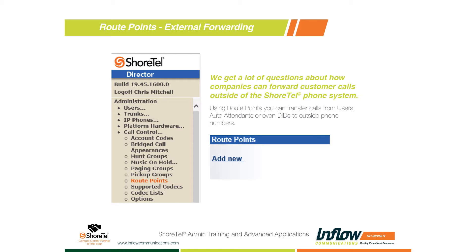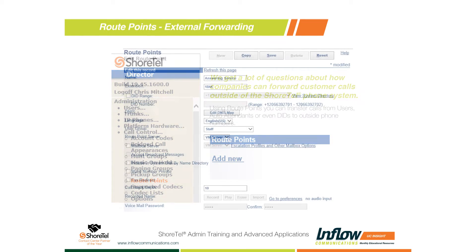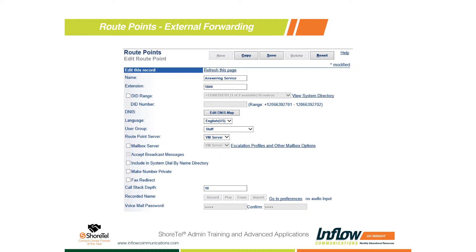To configure this, first log into Shoreware Director. Expand your call control and you'll see route points near the middle of the call control options. Select route points, and on the right side of the screen you'll see any route points already configured. At the top, click the 'Add New' button. When you hit Add New, it gives you an Edit Route Point page where you give it a name — whatever you name it will be displayed in the directory on the phone and in your communicator software. You also need to pick an extension number; it can be any extension you want.